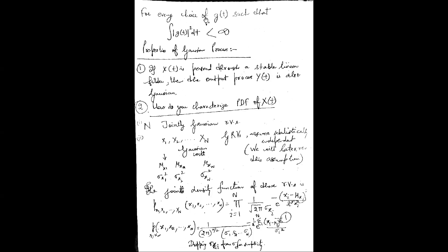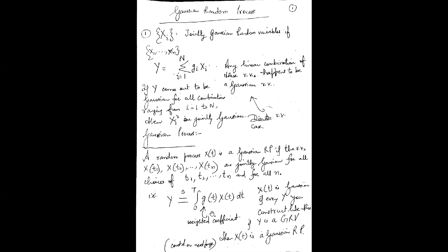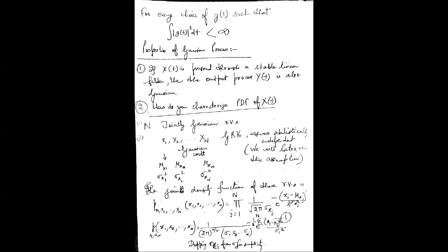One condition on the weighting function: g(t) cannot be arbitrary — the integral of g(t)² must be finite, i.e., less than or equal to a finite value. This ensures we have a finite weighted coefficient.